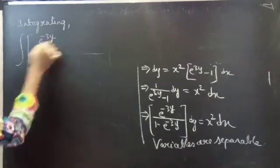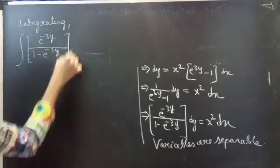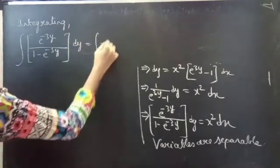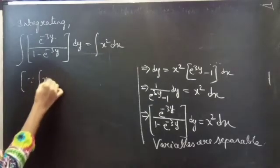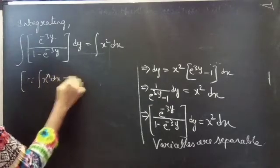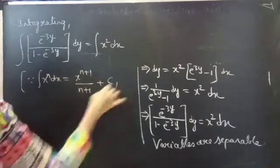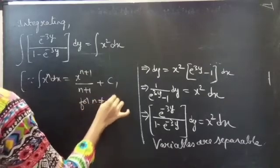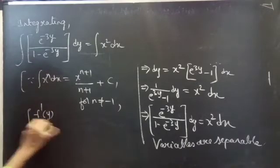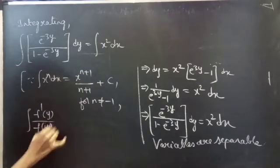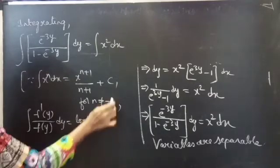So the integral becomes: integral of e to the power minus 3y over (1 minus e to the power minus 3y) dy equals integral of x squared dx. We use the formulas: integral of x to the power n dx equals x to the power (n+1) over (n+1) plus c, for n not equal to minus 1, and integral of f'(y) over f(y) dy equals log mod f(y).